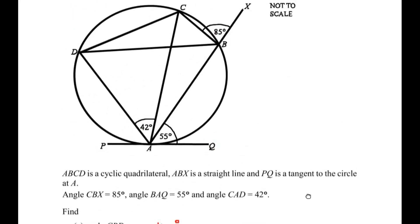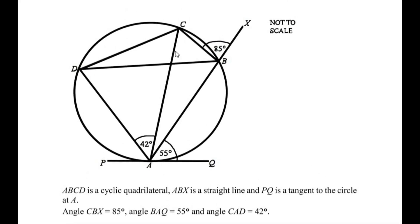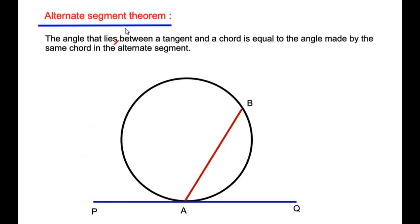Angle ACB is located here on the diagram. To find this angle I am going to use another circle theorem: the alternate segment theorem. It states that the angle between a tangent and a chord is equal to the angle made by the same chord in the alternate segment. For this theorem we need a tangent — which touches the circle at only one point — and a chord, which cuts the circle at two points.